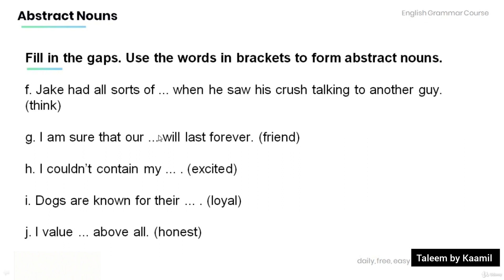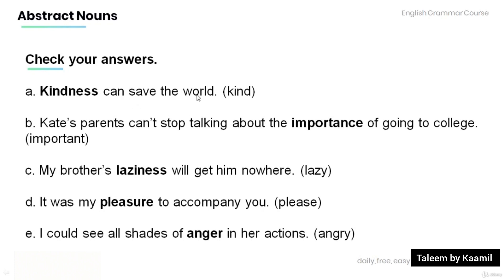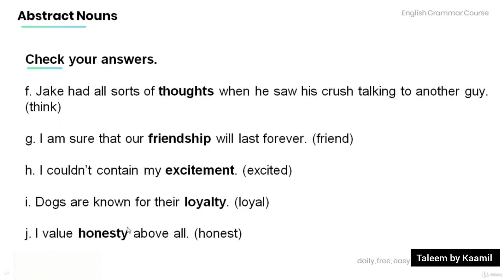And now, let's check your answers. A: 'Kindness can save the world.' B: 'Kate's parents can't stop talking about the importance of going to college.' C: 'My brother's laziness will get him nowhere.' D: 'It was my pleasure to accompany you.' E: 'I could see all shades of anger in her actions.' F: 'Jake had all sorts of thoughts when he saw his crush talking to another guy.' G: 'I am sure that our friendship will last forever.' H: 'I couldn't contain my excitement.' I: 'Dogs are known for their loyalty.' J: 'I value honesty above all.' Thank you for watching this tutorial.